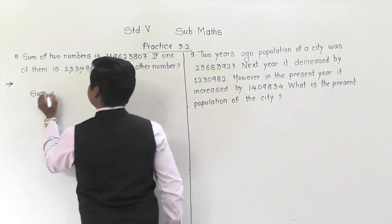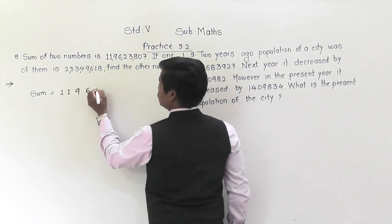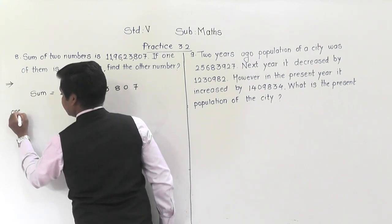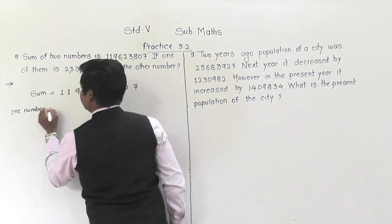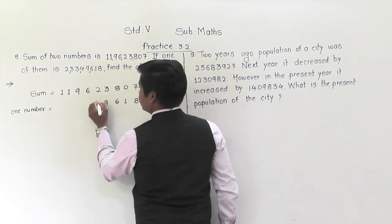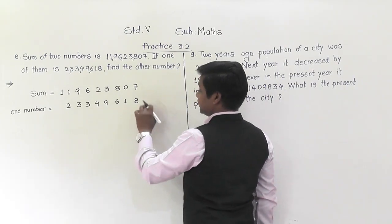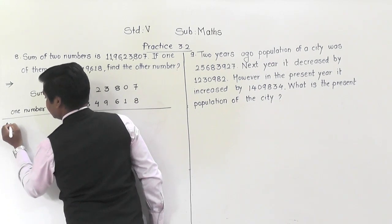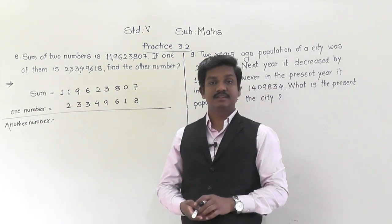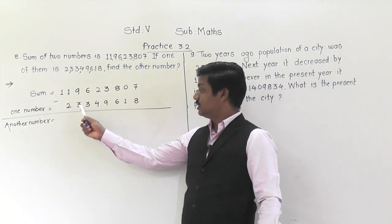Sum of two numbers is eleven crore ninety-six lakh twenty-three thousand eight hundred and seven. One of the numbers is two crore thirty-three lakh forty-nine thousand six hundred and eighteen. We have to find the other number. To find that other number, we need to do subtraction — subtract the one given number from the sum.